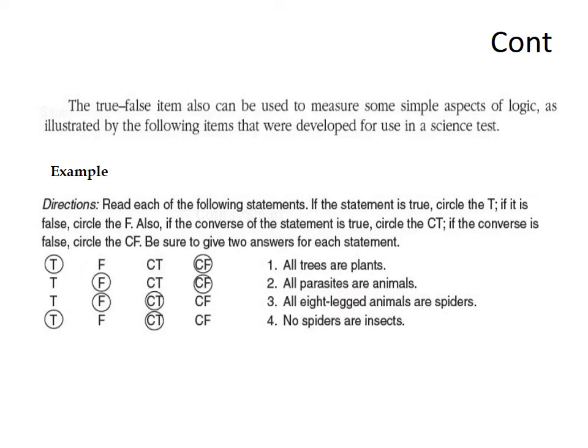The true-false item can also be used to measure simple aspects of logic. For example: 'Read each statement. If the statement is true, circle T; if false, circle F. Then convert the statement — if the converted statement is true, circle CT; if false, circle CF. Be sure to give two answers for each statement.'